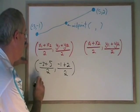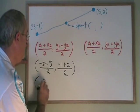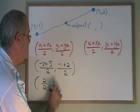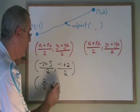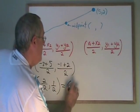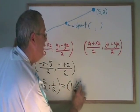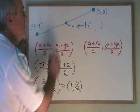This simplifies to give us 2 over 2, 1 over 2, and 2 over 2 is equal to 1. So our final answer is 1 comma 1 half are the x and y coordinates of the midpoint of this line.